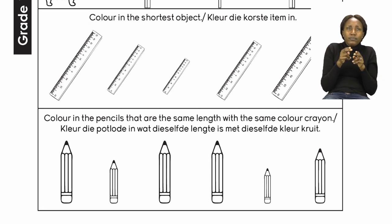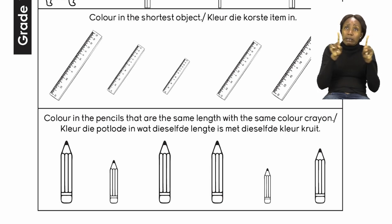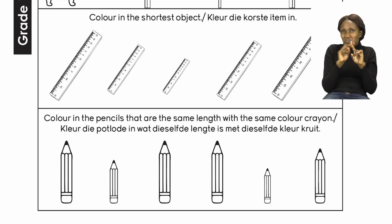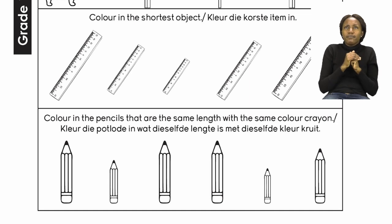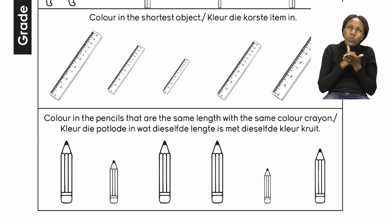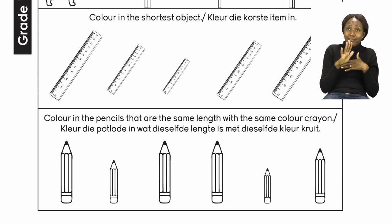The next thing you are going to do is colour in the pencils that are the same length with the same crayon colour. Look for the pencils that are the same size — some are the same and some are not. The ones that are the same, you are going to colour with one colour. For example, the ones in the middle look like they are the same, so choose a colour and colour both of them the same. Take your time with your colouring, boys and girls, there is no need to rush. After this, we are going to do another activity on the next page, page 25.